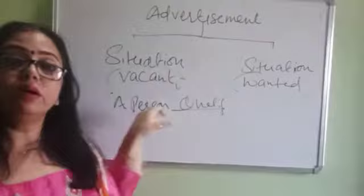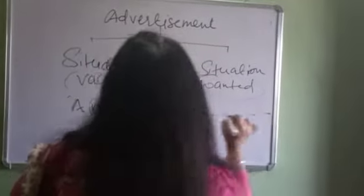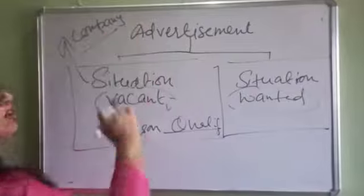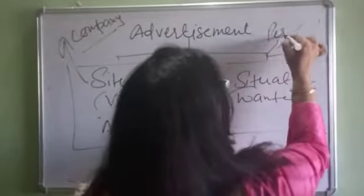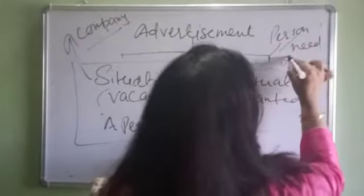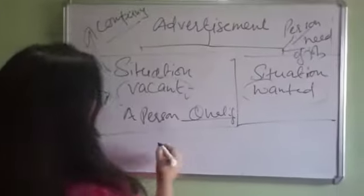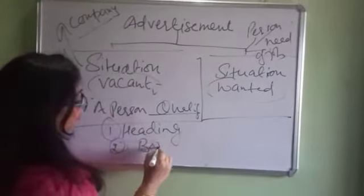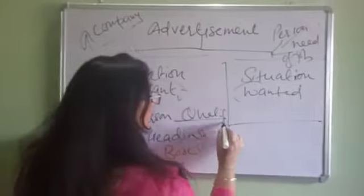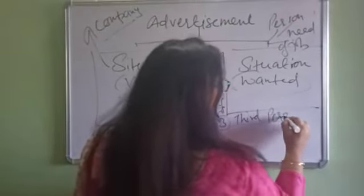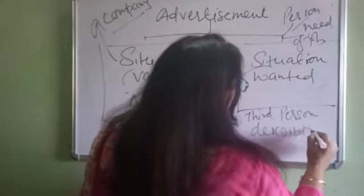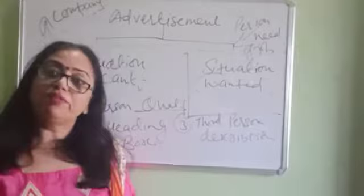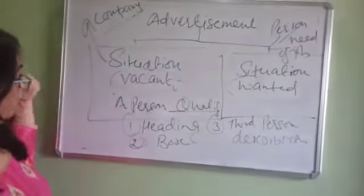At the end, 'interested people can contact me' — here you mention your phone number and mail ID. The difference: situation vacant is given by the company or organization in need of people, and situation wanted is given by the person himself who is in need of a job. Key points to keep in mind: always use a heading, there should be a proper box, always write in third person description, and do not extend the word limit — if given 50 words, sum up within 50 words.